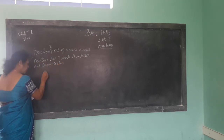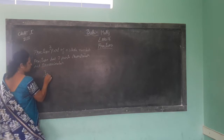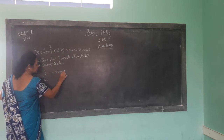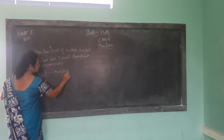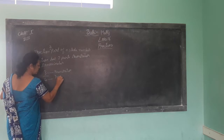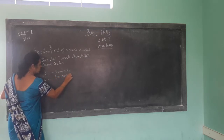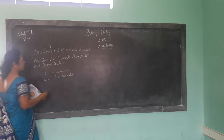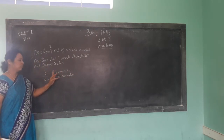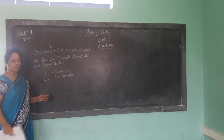For example, I'll give three by four. This top number is called numerator. Top number is called numerator. Down number is called denominator. Fraction has two parts — numerator and denominator. Top number is called the numerator. Down number is called the denominator.